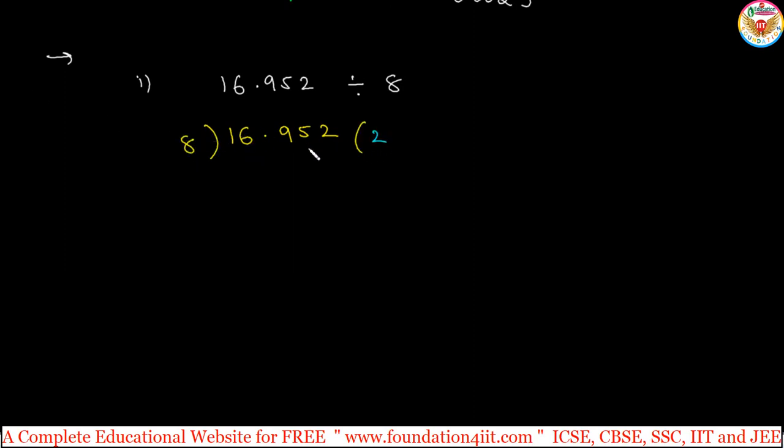So 8 times 2 is 16, remainder 0. Now when you take the decimal, when you take the number after the point, you also keep the point here - there is only one change. Divide in the normal manner, ignoring the decimal and mark the decimal point in the quotient when just crossing over the decimal point in the dividend. When you cross this, keep the point here. 9 it is.